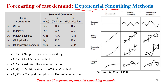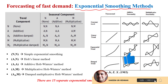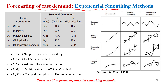Whenever we talk about time series data, especially when we have the fast moving demand — which we discussed in our first two lectures — we can divide the pattern of time series data into three components: the level component, the trend component, and the seasonal component. Based on these particular components, we decide what kind of exponential smoothing models to apply.